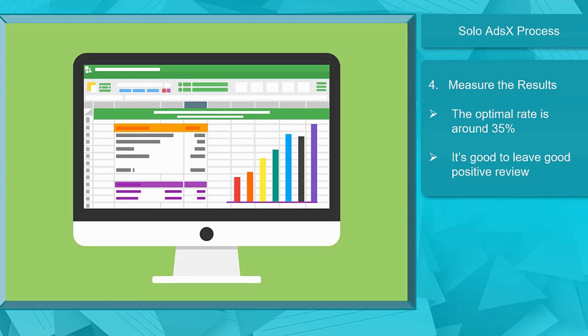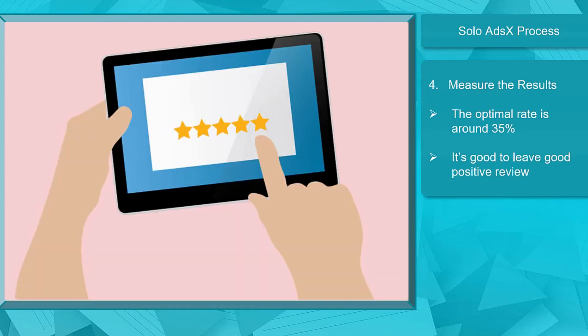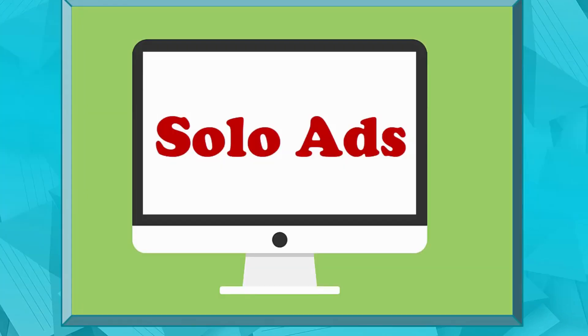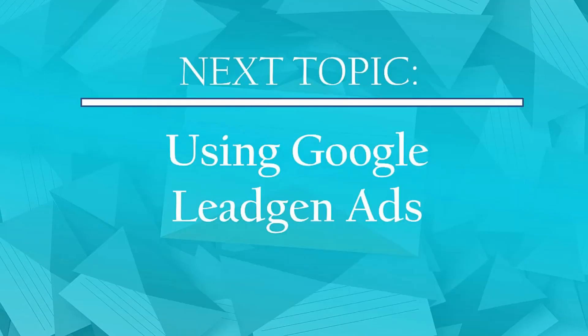And lastly, measure the results. The optimal conversion rate that you can expect is around 35%. Then you can leave a good and positive review for the vendor you have chosen. Now that you know what solo ads are and how to use them, we can proceed to the next topic: using Google lead gen ads. I'll see you there!